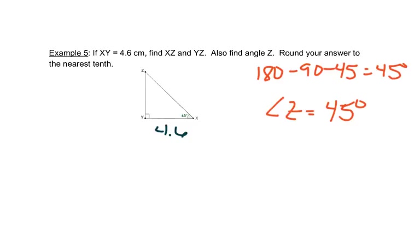So that tells me that if YX or XY, this side here is 4.6, the other side that makes the right angle, comes together to form that right angle, has to be 4.6 as well. So this side right here, or YZ, is 4.6 centimeters also.